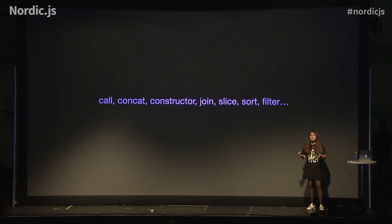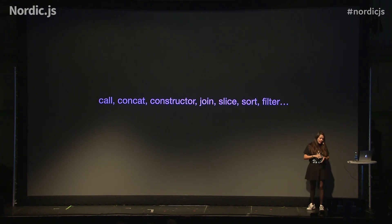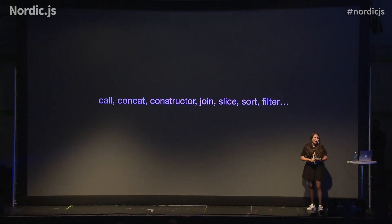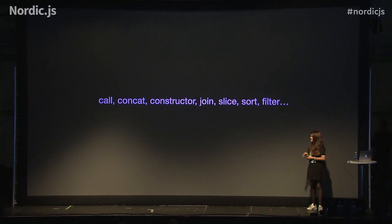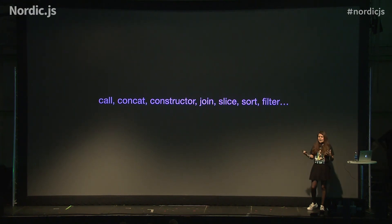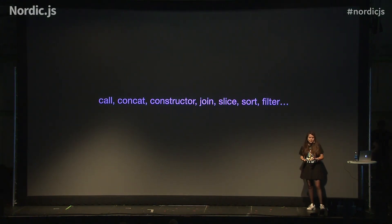To keep things short, we have access to functions such as call, concat, constructor, join, slice, sort, and filter using this technique. But how does this actually look in action? So far I have just shown you expressions — how to show true and false in the console. But how can we actually make it do something in our browsers?